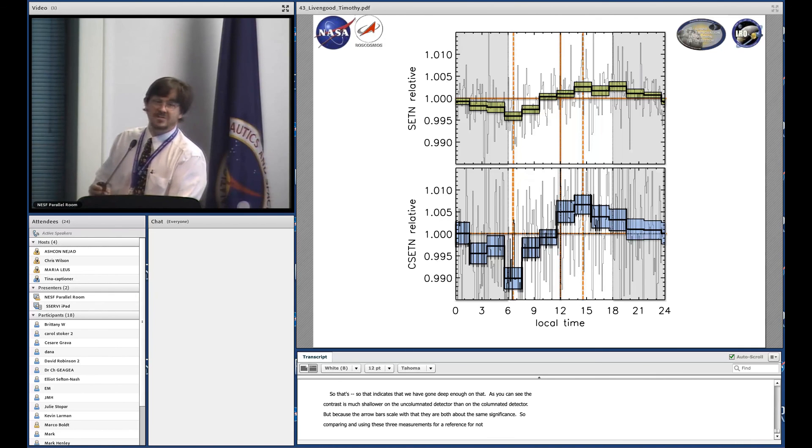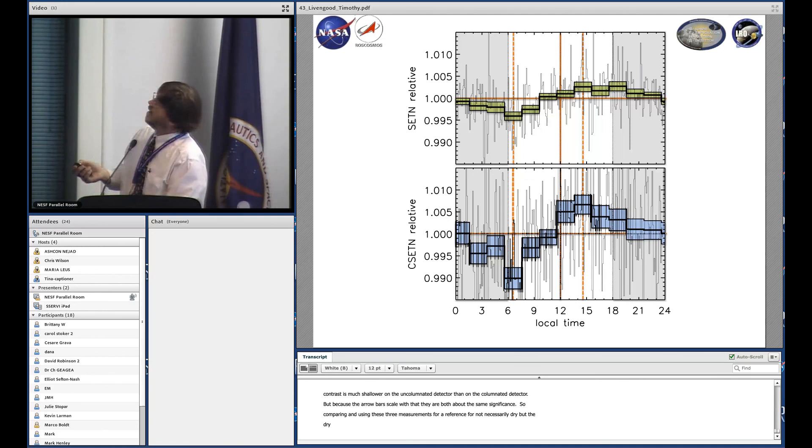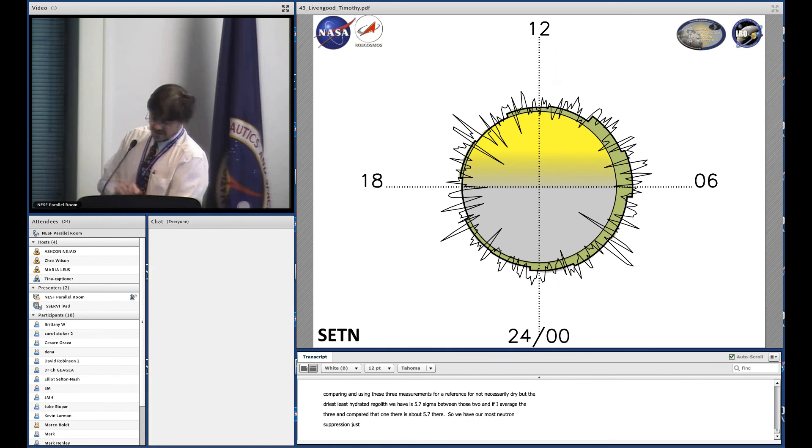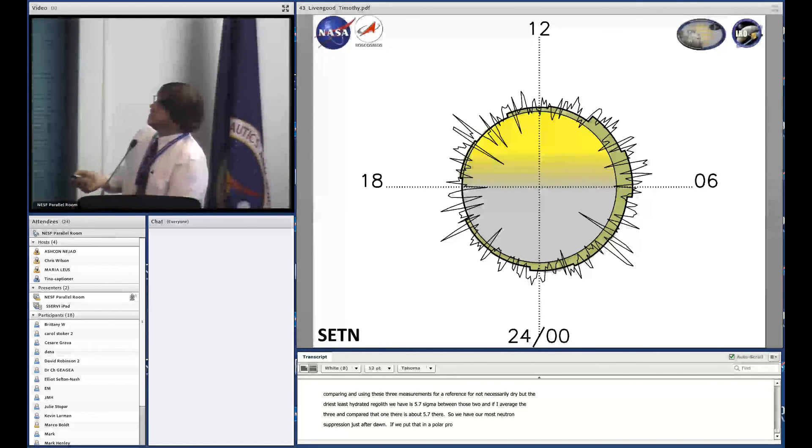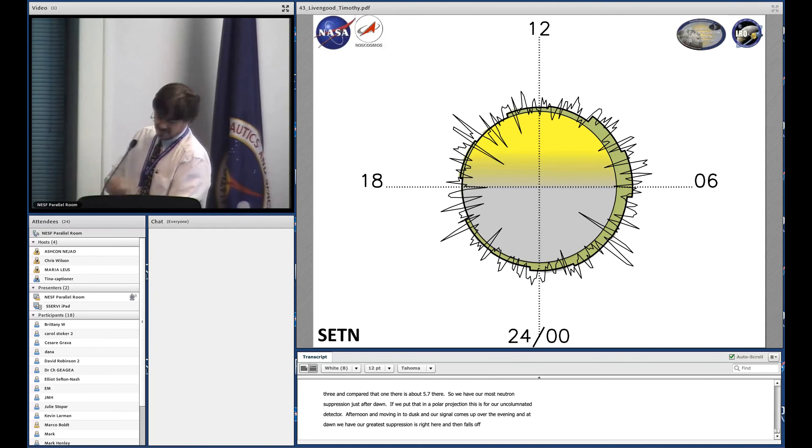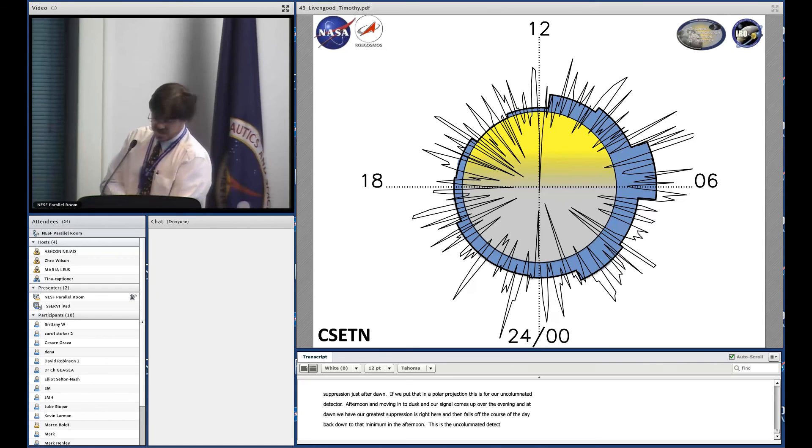Using these three measurements as a reference for the driest or least hydrated regolith we have, there's about 5.7 sigma between those two. Similarly, if I average these three of the least suppressed and compare to that one, there's about 5.7 there. We have our most neutron suppression just after dawn. In polar projection, this is for our uncollimated detector. Our most suppressed signal is over here in the afternoon moving into dusk. Our signal comes up over the evening, and at dawn we have our greatest suppression right here. It then falls off during the day back down to that minimum in the afternoon. With the higher energy neutron population seen by the collimated detector, we see something similar but with greater contrast.